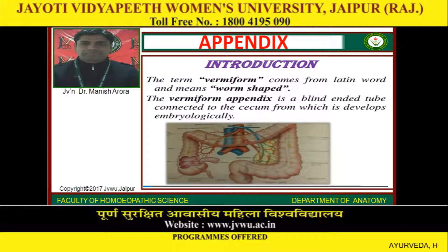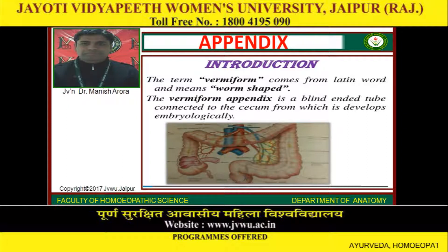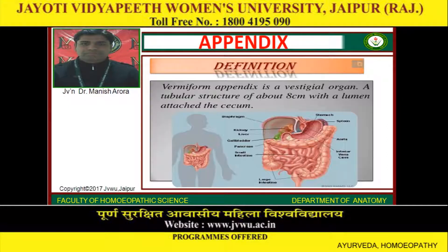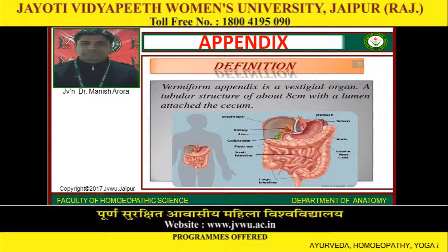Introduction: The term vermiform comes from the Latin word and means worm-shaped. The vermiform appendix is a blind-ended tube connected to the cecum, from which it develops embryologically. It is a vestigial organ — a tubular structure of about 8 cm with a lumen, attached to the cecum.